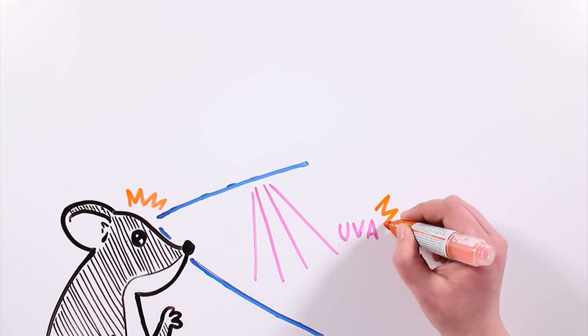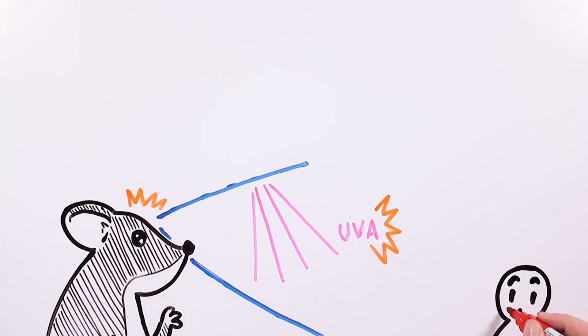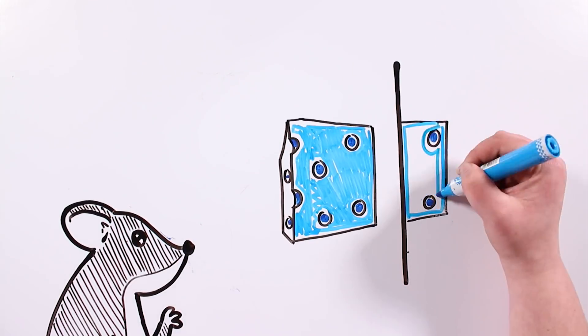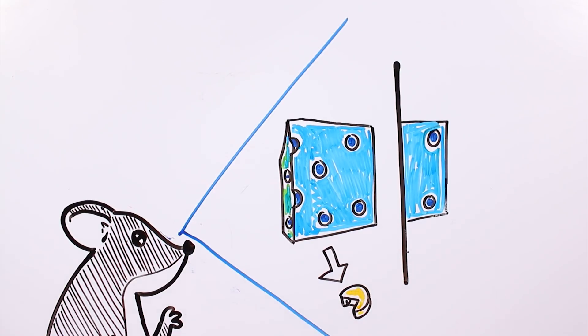Therefore, contrary to us, they can see ultraviolet light. Also, since their eyes are located on the sides of their head, they have a really wide range of vision, and they can move each eye independently from the other.